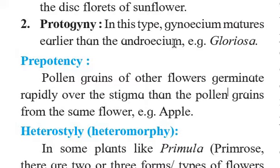So what happens in protogyny? The gynoecium has already matured, and pollen grains from a different flower will come and get deposited on it, fertilization will also occur, and a zygote will also form. Later, the androecium will mature and its pollen grains will be released and will be available for the stigma of a different flower of a different plant. The example given is Gloriosa.